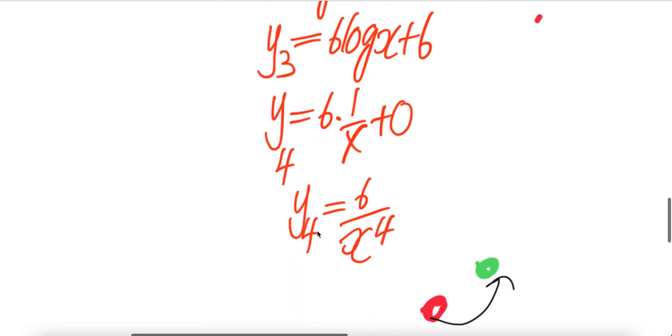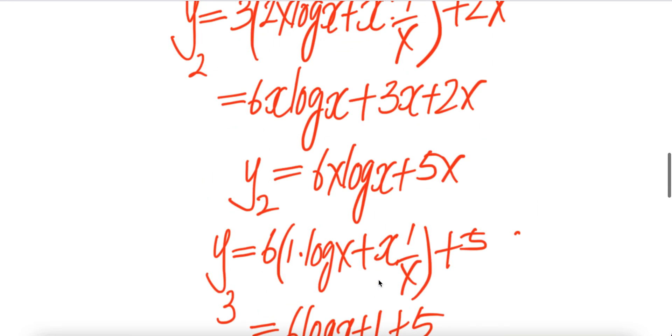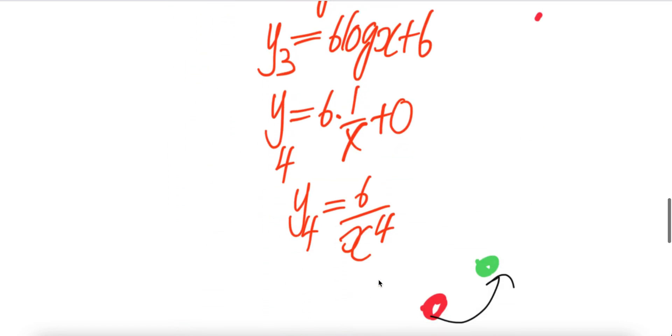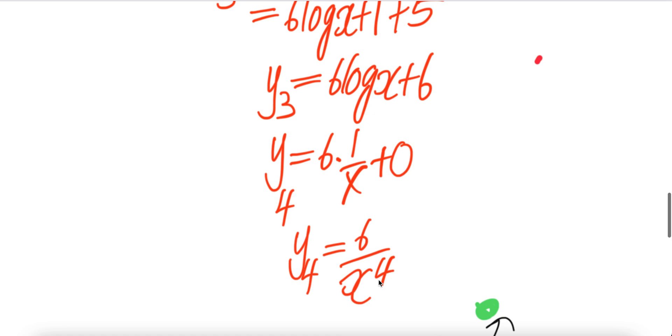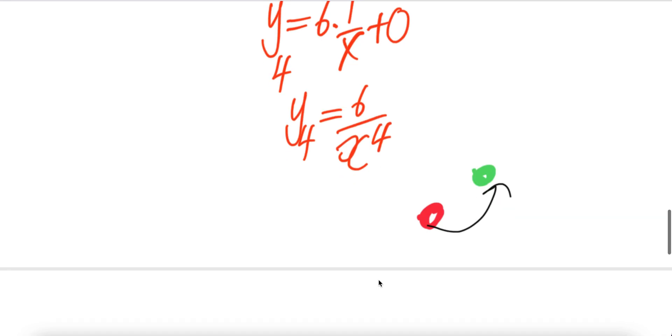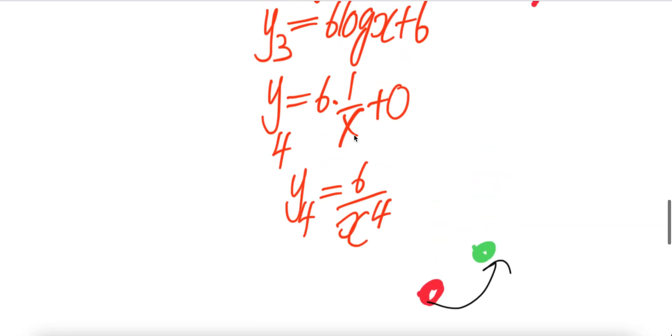So the answer is, y subscript 4 is equal to 6 over x to the power of 4. Why is it x to the power of 4? Guys, there's a typo again here. This is not x to the power of 4, man. This y subscript 4 is equal to 6 times 1 over x. How come there'll be a 4? Because maybe, I saw a 4 here, I put a 4. Remove this 4. It will be 6 over x. Okay. This one, 6 over x. Done.